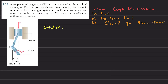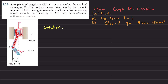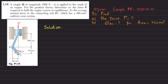Welcome back. Problem 1.14: a couple M of magnitude 1500 newton-meter is applied to the crank of an engine. For the position shown, determine the force P required to hold the engine system in equilibrium, and in part B, the average normal stress in connecting rod BC which has a 450 square millimeter uniform cross-section. The couple is given; we have to find the force and average normal stress.